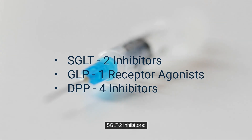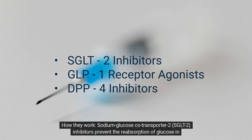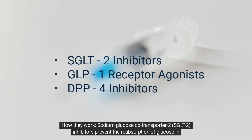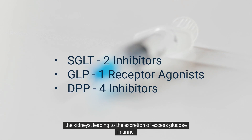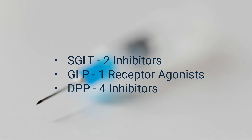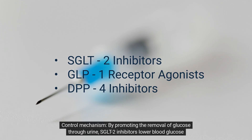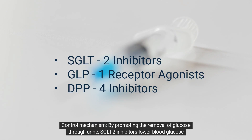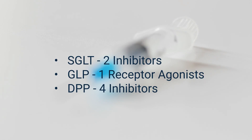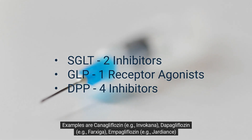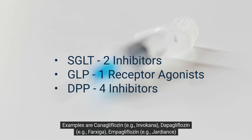SGLT-2 inhibitors: Sodium-glucose co-transporter 2 (SGLT-2) inhibitors prevent the reabsorption of glucose in the kidneys, leading to the excretion of excess glucose in urine. By promoting the removal of glucose through urine, SGLT-2 inhibitors lower blood glucose levels. Examples are canagliflozin (Invokana), dapagliflozin (Farxiga), and empagliflozin (Jardiance).